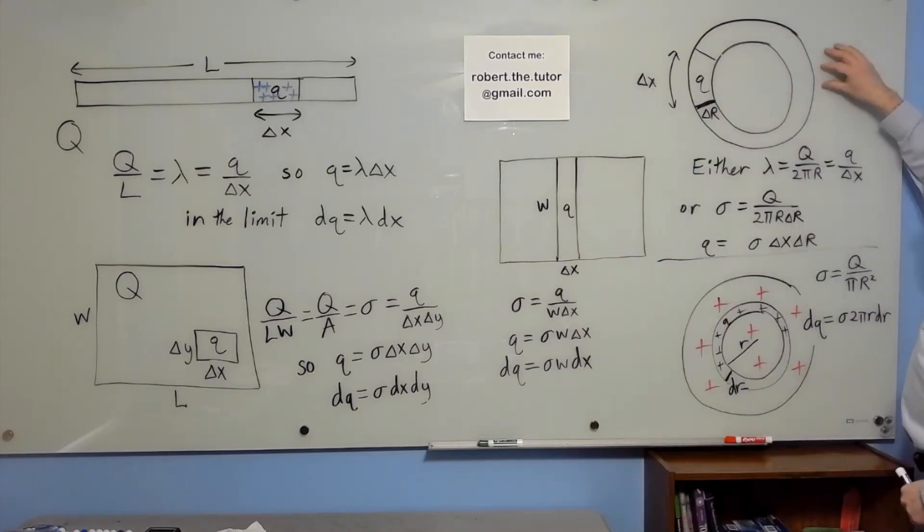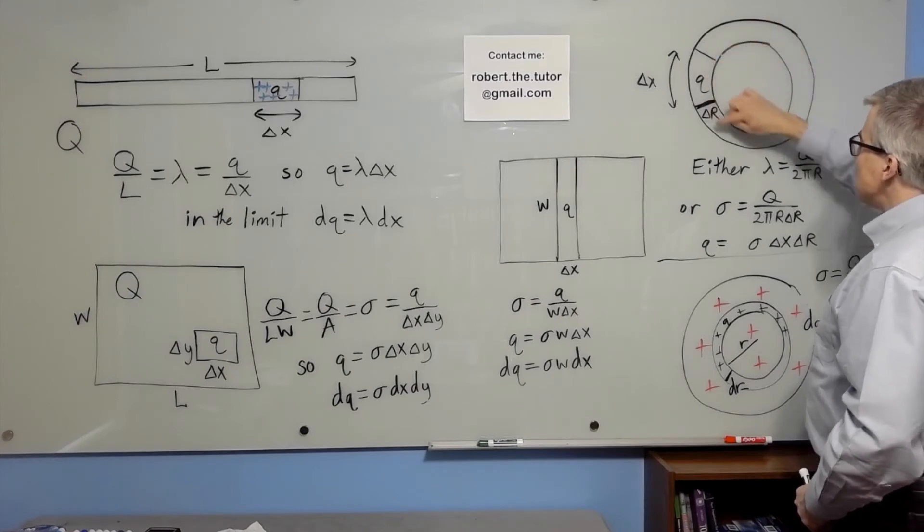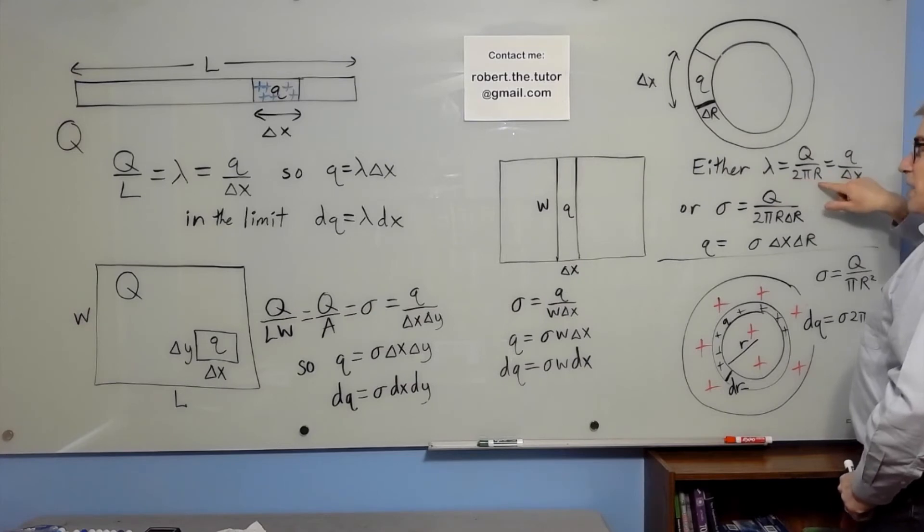For a ring of charge, you can view it two ways. You can think of it as one-dimensional and have lambda be total charge over 2 pi r.